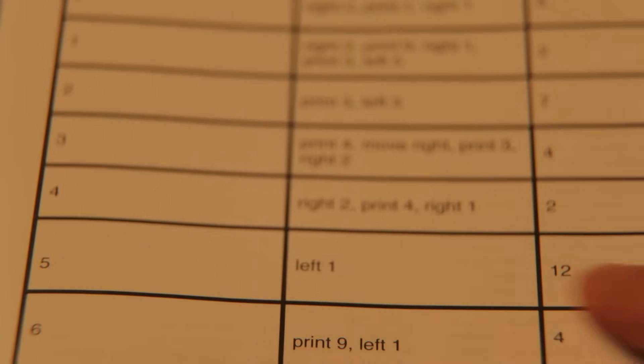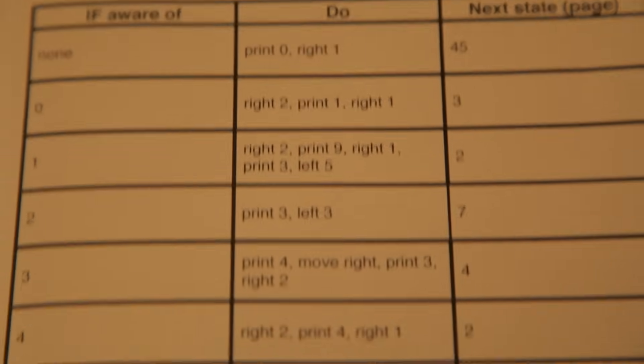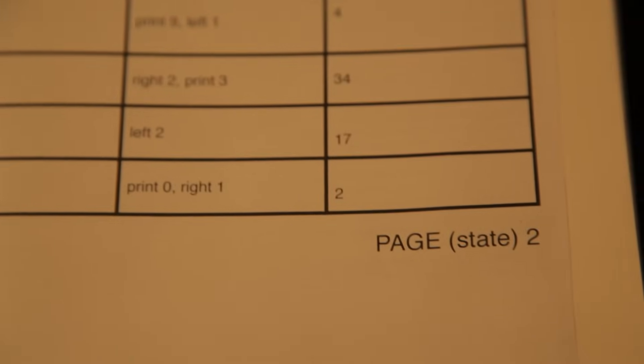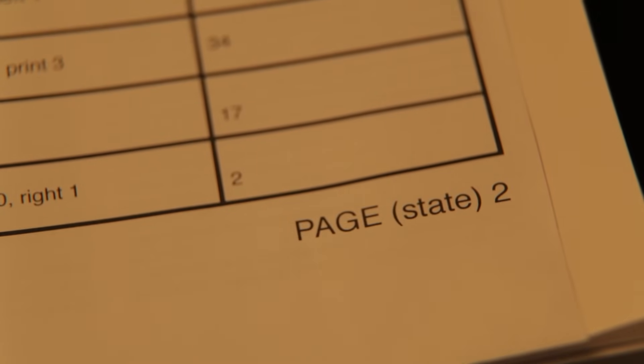And so the last column in the table, called Next State, lists the next page to jump to. In this book analogy, each page in the book is a new step. Turing calls these steps states of the machine.